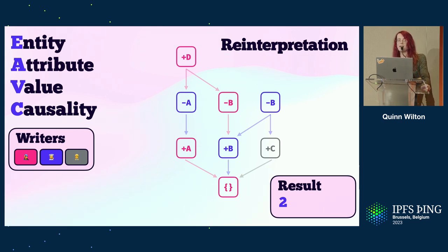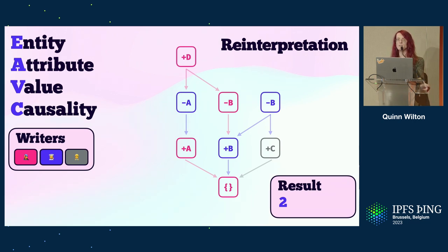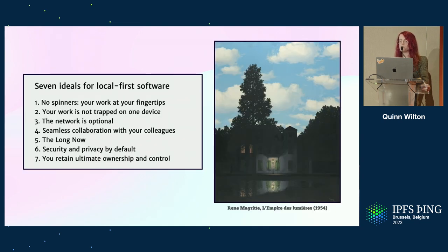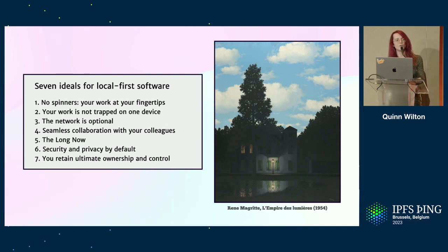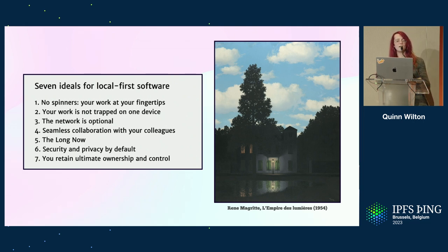This is only an idea we're beginning to explore now in software, with the sorts of bring-your-own-algorithm approaches that protocols like Blue Sky are experimenting with. But I think it's one of the most exciting possibilities available to us in terms of shifting agency back into the hands of the people that we're building software for. And autonomy is one of the driving motivators behind Local First Software, a paradigm coined by Ink and Switch in 2019. It defines a set of guiding principles for building software that prioritize user privacy, security, and agency.